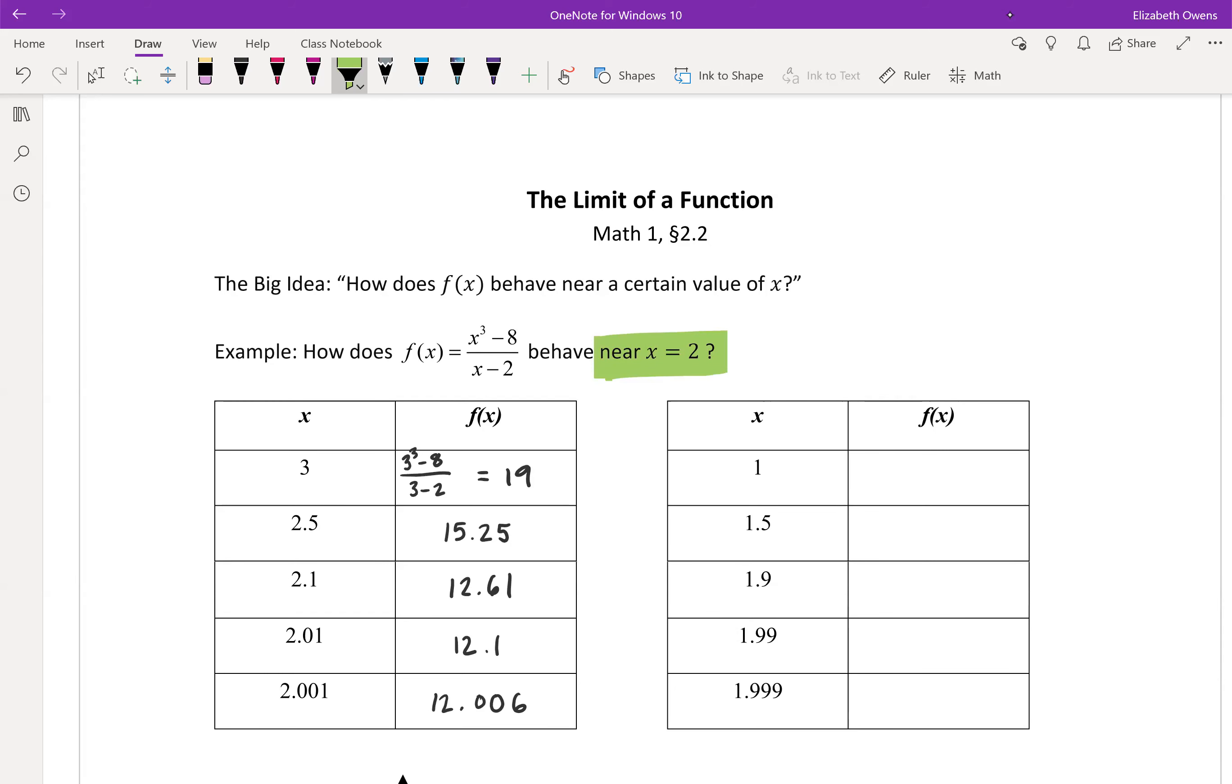Okay, so our x values that we're plugging in here are getting closer and closer to 2. All right, we're going from 3 to 2.5 to 2.1, 2.01, 2.001, so we're edging in closer and closer to x equals 2.